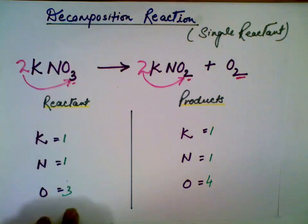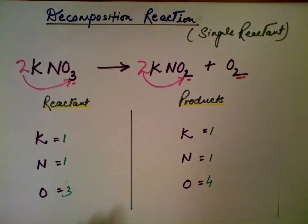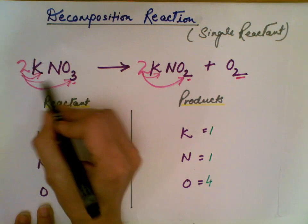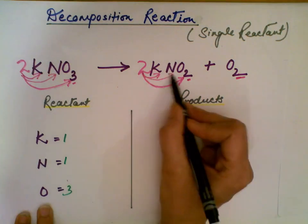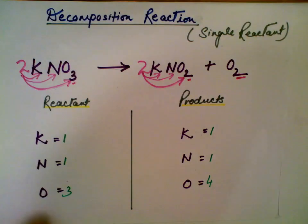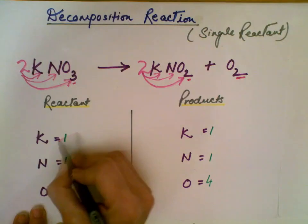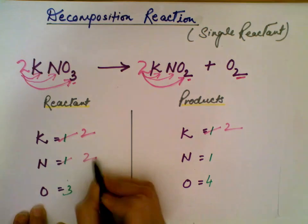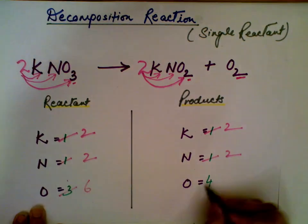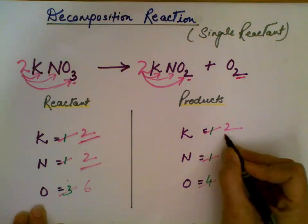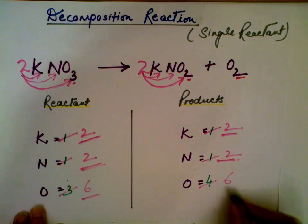Now let's check potassium and nitrogen. The big coefficient in front applies to every element in the formula. So potassium is 2 on both sides and nitrogen is 2 on both sides. Oxygen is 6 and 6. The equation is balanced: 2, 2, 2, 2, and 6, 6.